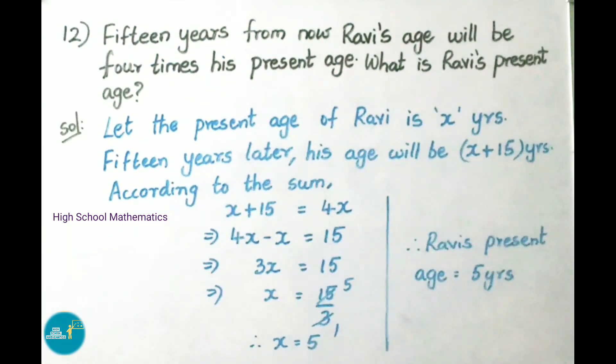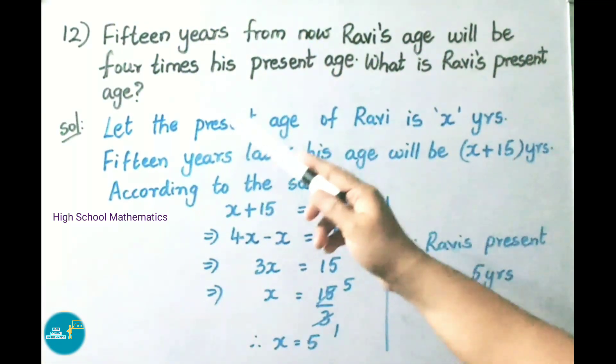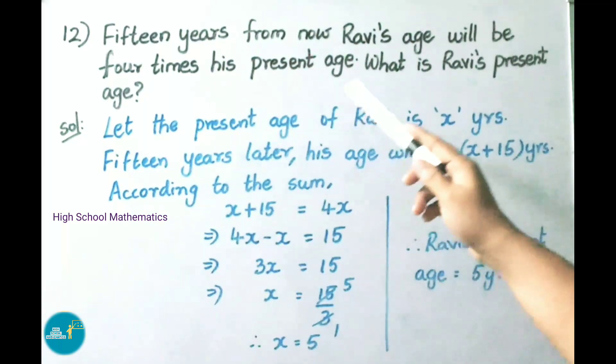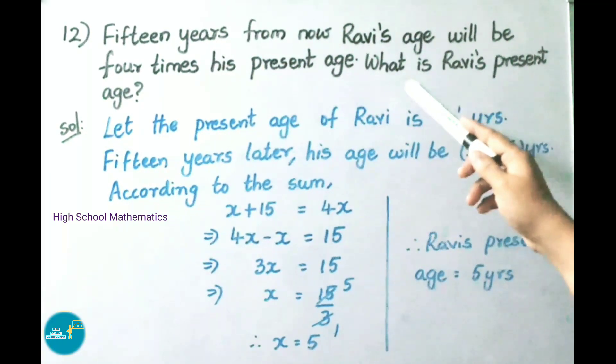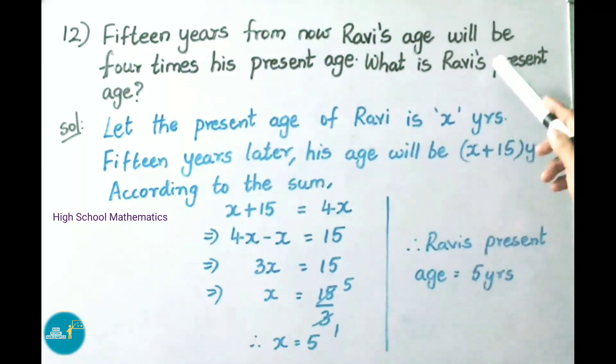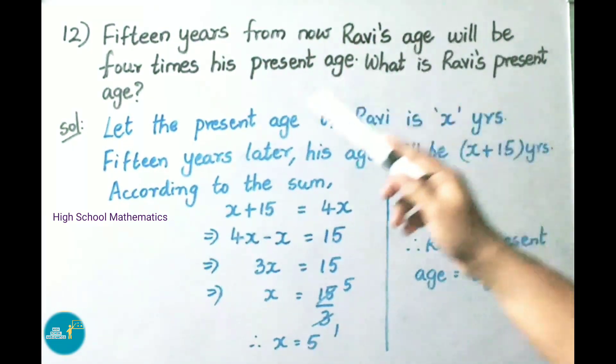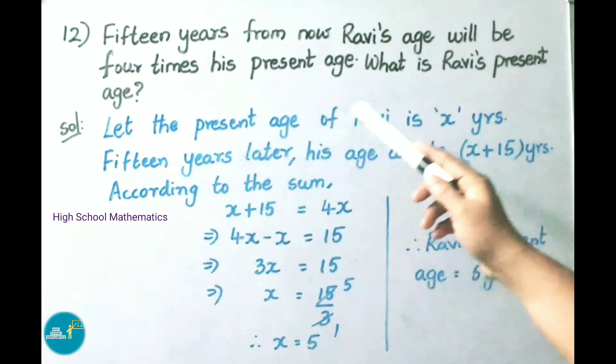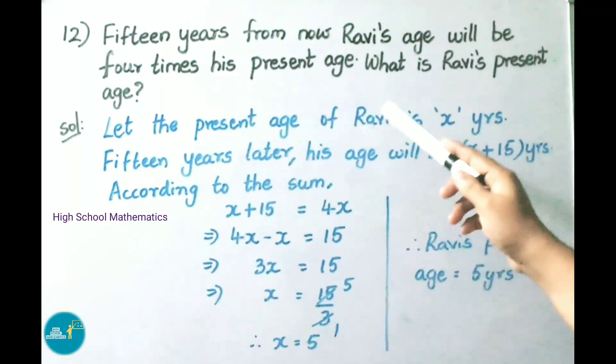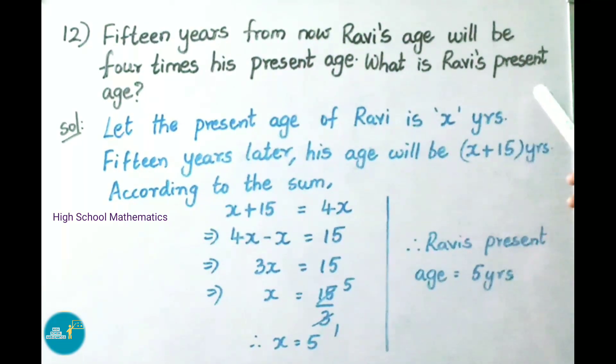See now question number 12. 15 years from now, Ravi's age will be 4 times his present age. What is Ravi's present age?